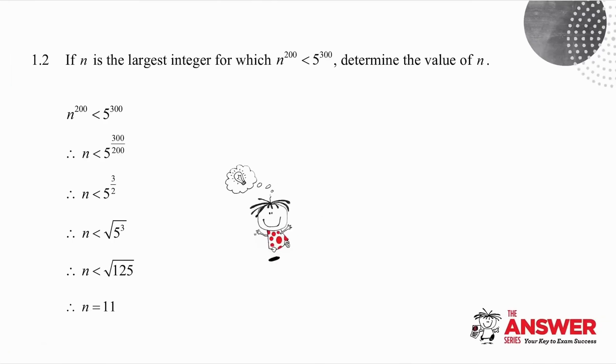Number 1.2. They tell you that n is the largest integer, and I need to determine the value of n. So the first thing I do is I'm going to take the 200th root on both sides. And remember, we've got this law. The pth root of a to the q is a to the power q over p. So this becomes 5 to the power 300 over 200. In other words, 5 to the 3 over 2. I then use this law the other way. And this becomes the square root of 5 cubed, which is the square root of 125.